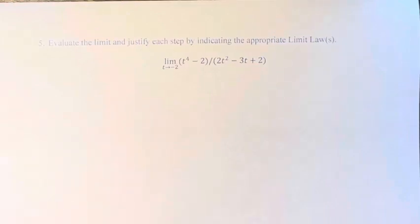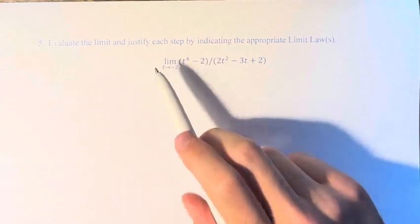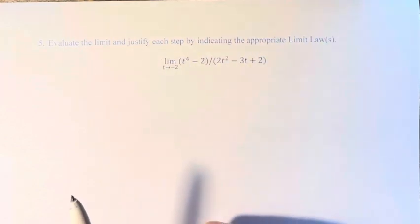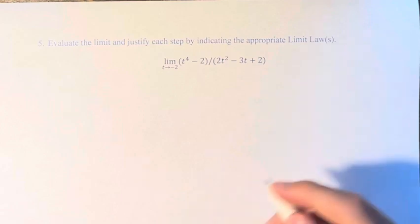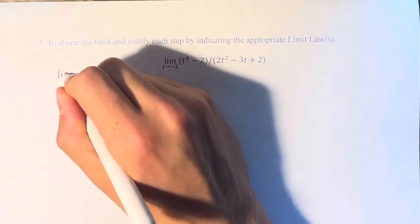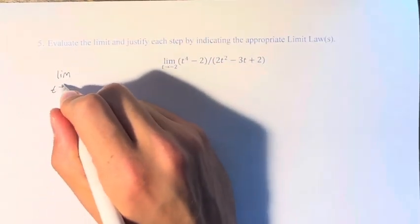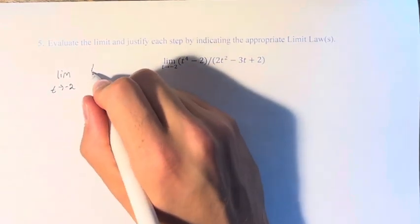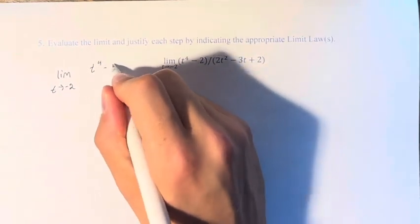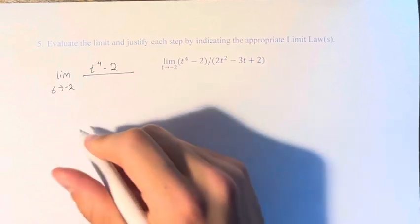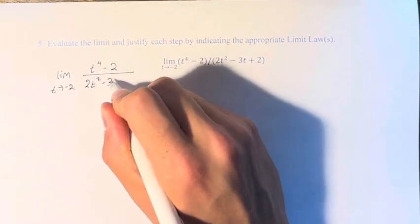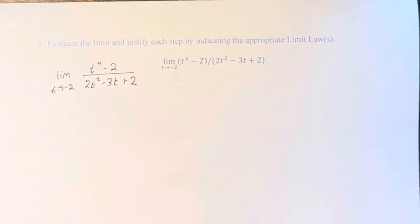Hello, and welcome back to another video. In this problem, we're asked to evaluate the limit and justify each step by indicating the appropriate limit laws. We have the limit as t approaches negative 2 of t to the 4th minus 2, over 2t squared minus 3t plus 2.